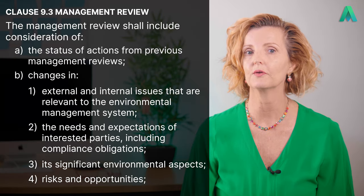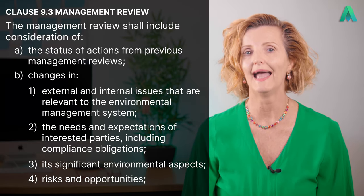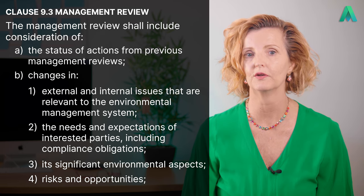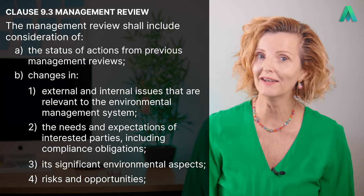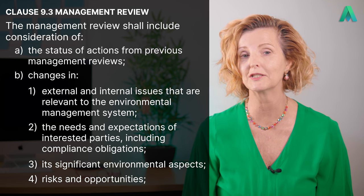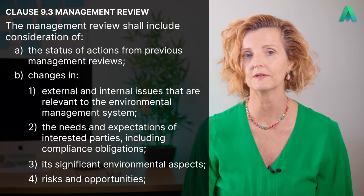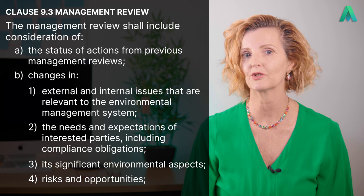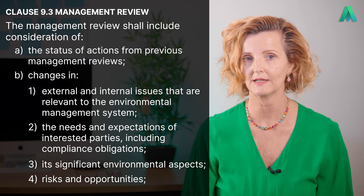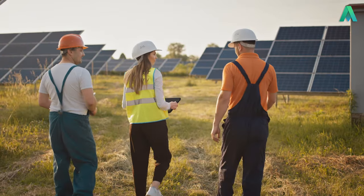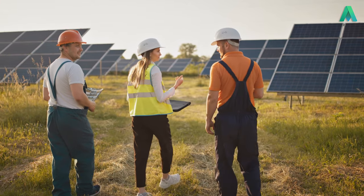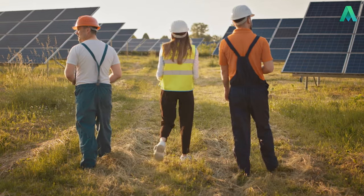Moving to the next section, the management review shall include consideration of: A, the status of actions from previous management reviews; and B, changes in external and internal issues relevant to the environmental management system, the needs and expectations of interested parties including compliance obligations, significant environmental aspects, and risks and opportunities. Each management review is not a silo event — previous review actions must feed into the next review. It's an ongoing process, and any changes that influence the business and therefore the EMS should be brought up here.